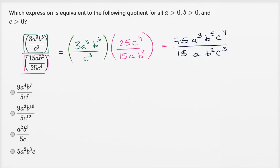Now we can try to simplify. So what's 75 divided by 15? If you divide 75 by 15, you're going to get five. And if you divide 15 by 15, you get one. So the coefficient on this thing is just going to be five.